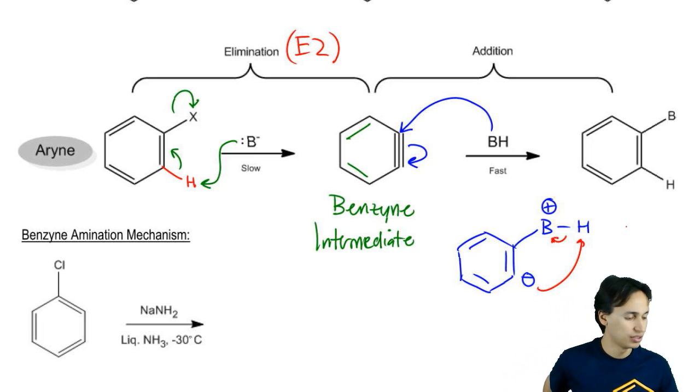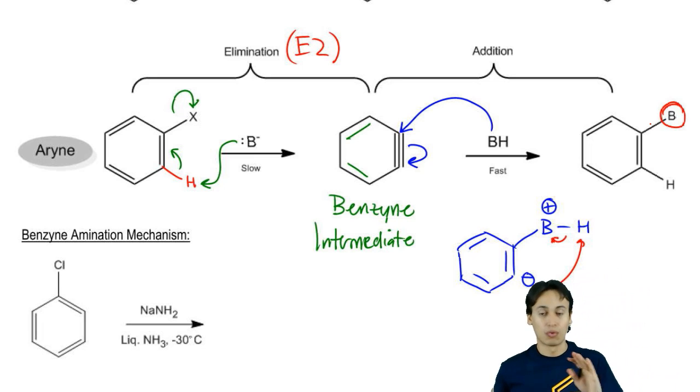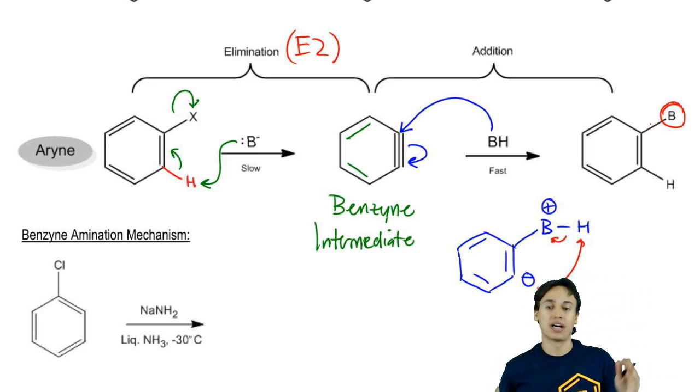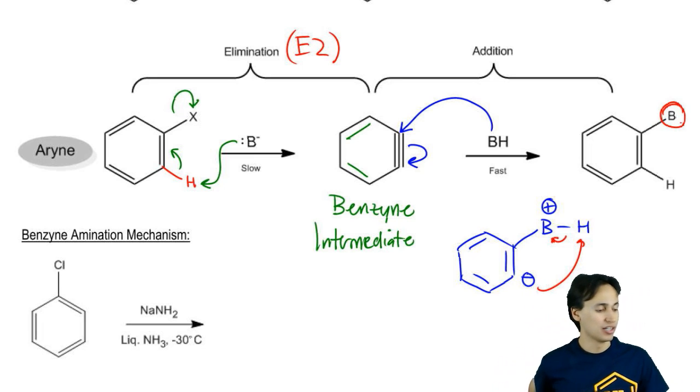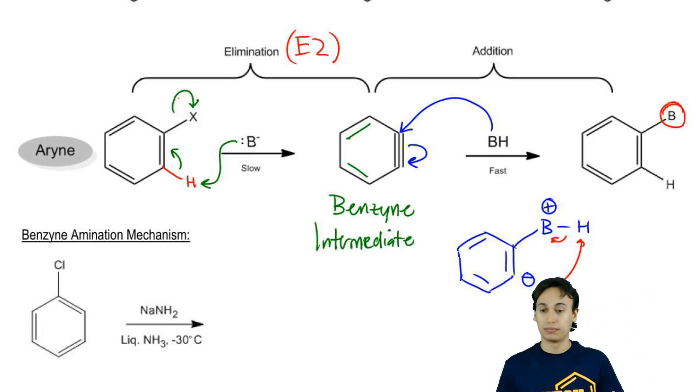Then to finish this up, this negative can do a proton exchange, finally grab the H, and we get our substitution. It's kind of a weird pathway, but we got a base to switch out for a halogen.